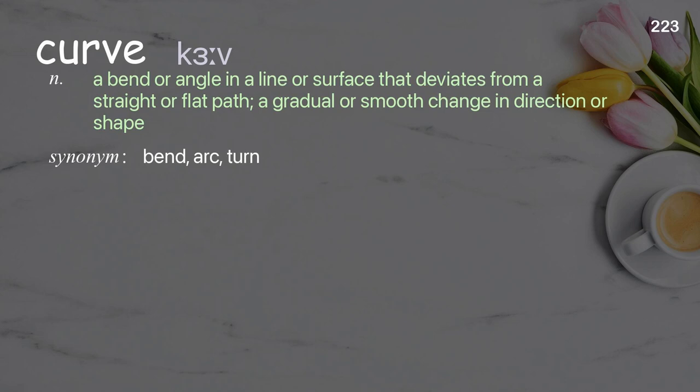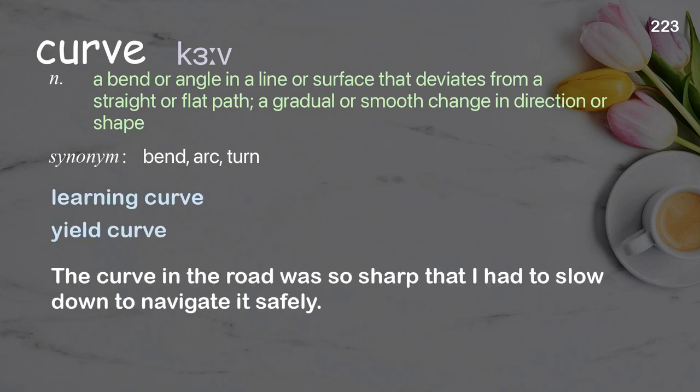Curve: a bend or angle in a line or surface that deviates from a straight or flat path; a gradual or smooth change in direction or shape. Examples: learning curve, yield curve. The curve in the road was so sharp that I had to slow down to navigate it safely.